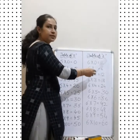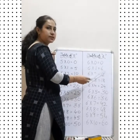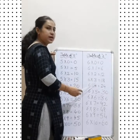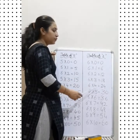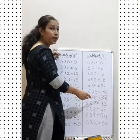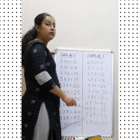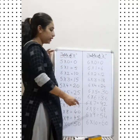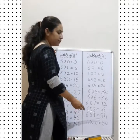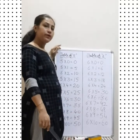Next, table of 6: 6 0's are 0, 6 1's are 6, 6 2's are 12, 6 3's are 18, 6 4's are 24, 6 5's are 30, 6 6's are 36, 6 7's are 42, 6 8's are 48, 6 9's are 54, 6 10's are 60.